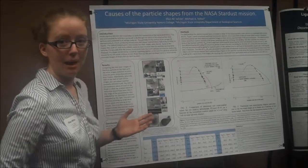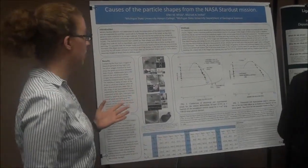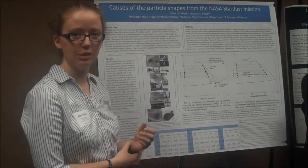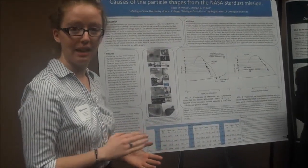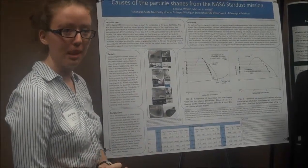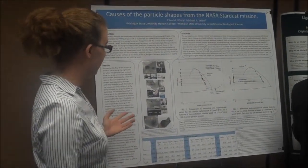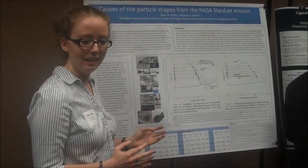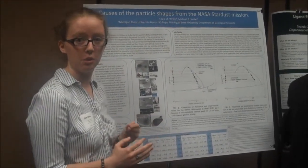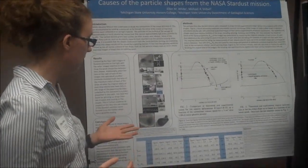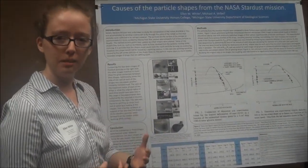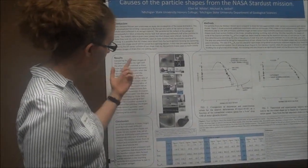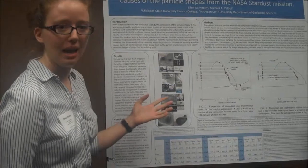My poster is about the NASA Stardust design, which is basically where they sent a spacecraft into space to fly through the tail of a comet to collect the particles and then examine them. My poster included the shapes of the particles, because when they hit the aerogel material that was used to collect them, they turned molten because they hit so fast. Many of them had unusual shapes after they spun.